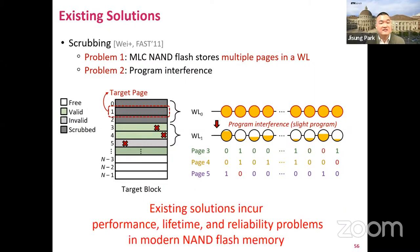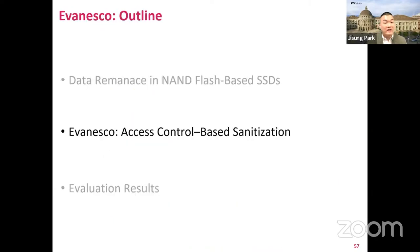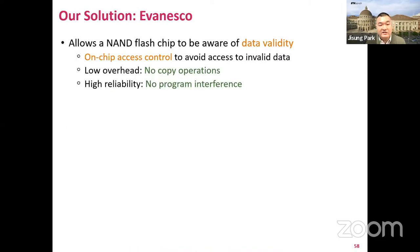In conclusion, existing solutions that physically destroy data incur significant performance, lifetime, and reliability problems in modern NAND flash memory. Let me introduce our key idea called Evanesco. Our key idea is to allow a NAND flash chip to be aware of the validity of each page so that the chip itself can avoid access to invalid pages. The key point is that Evanesco does not touch flash cells that store user data, so it can avoid copying valid pages and affecting the reliability of stored data.